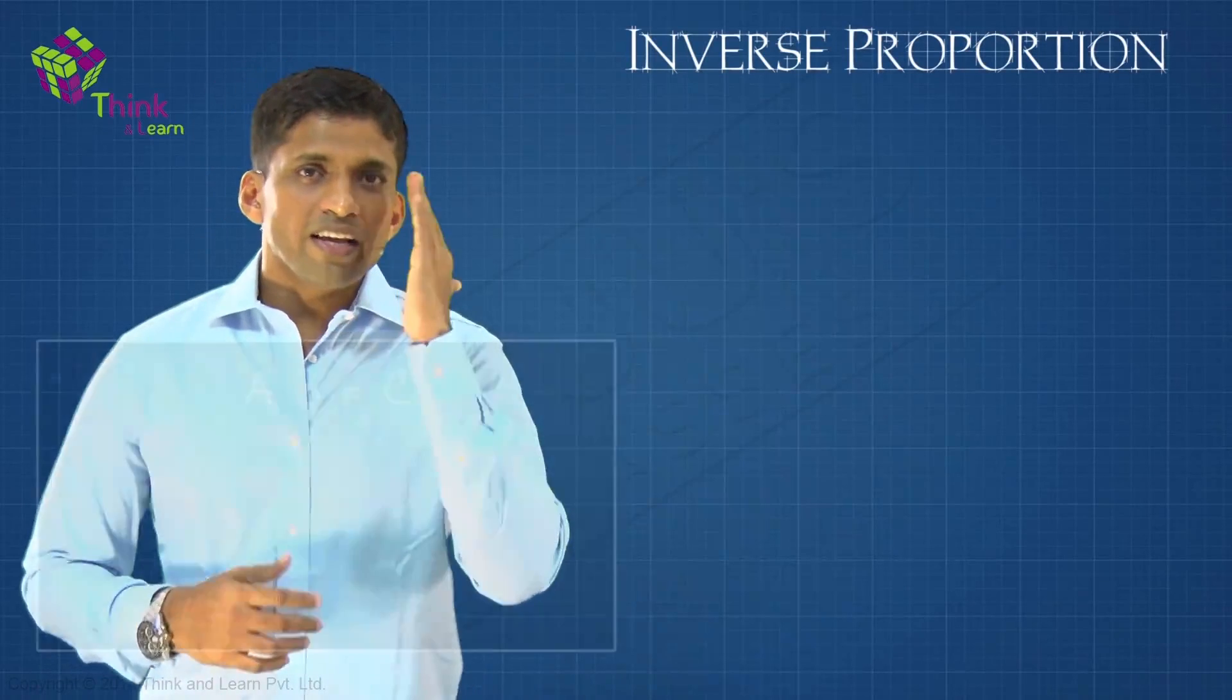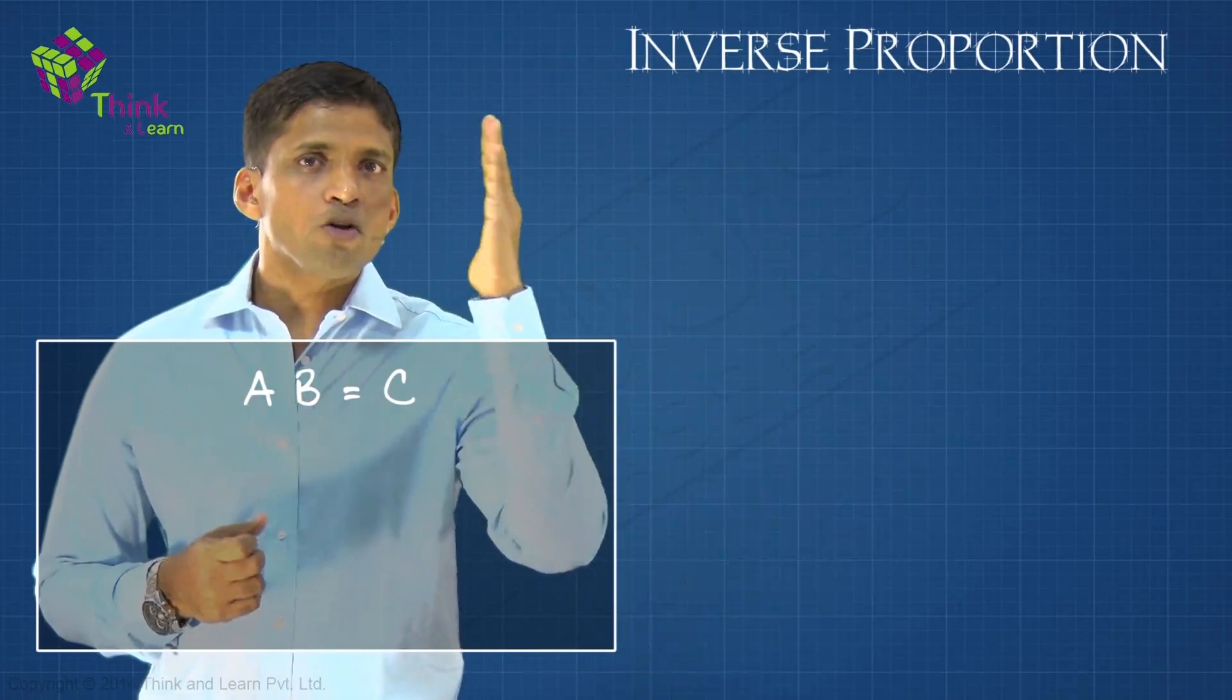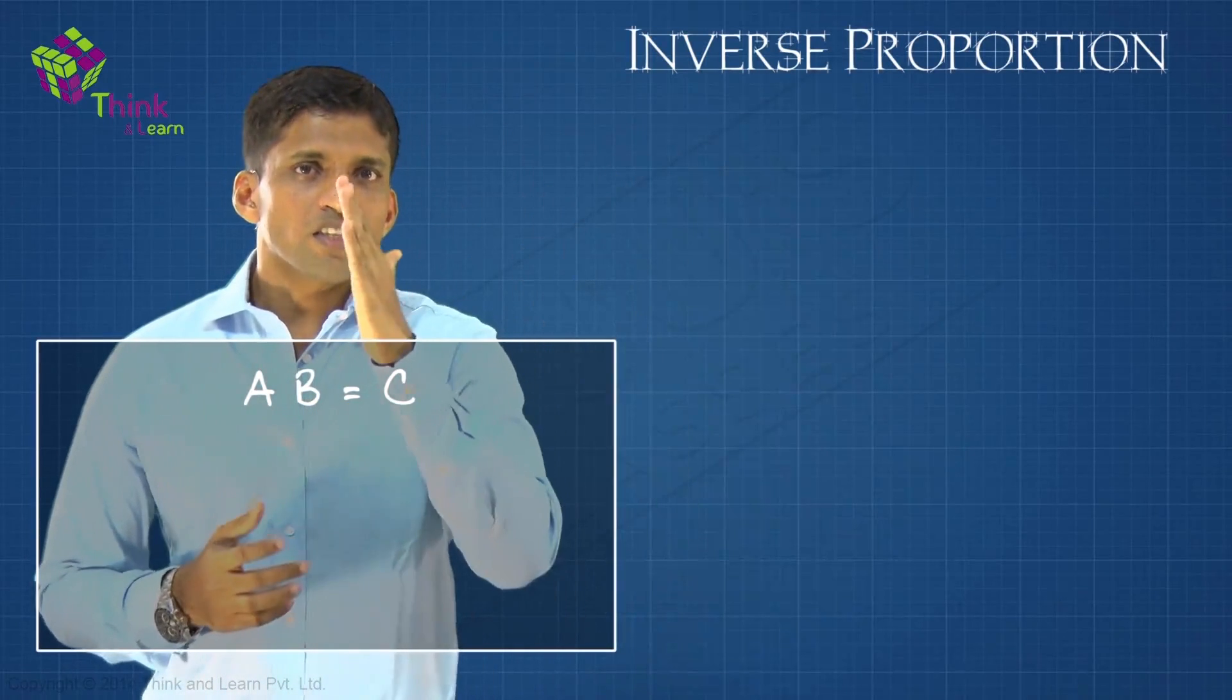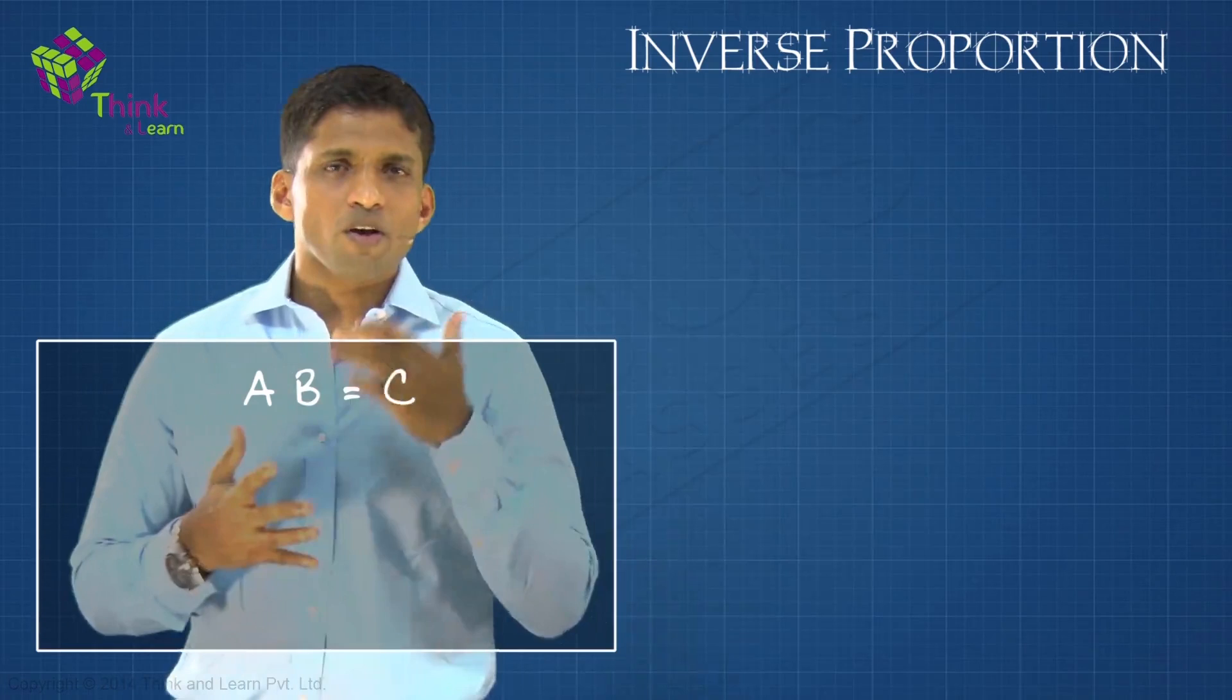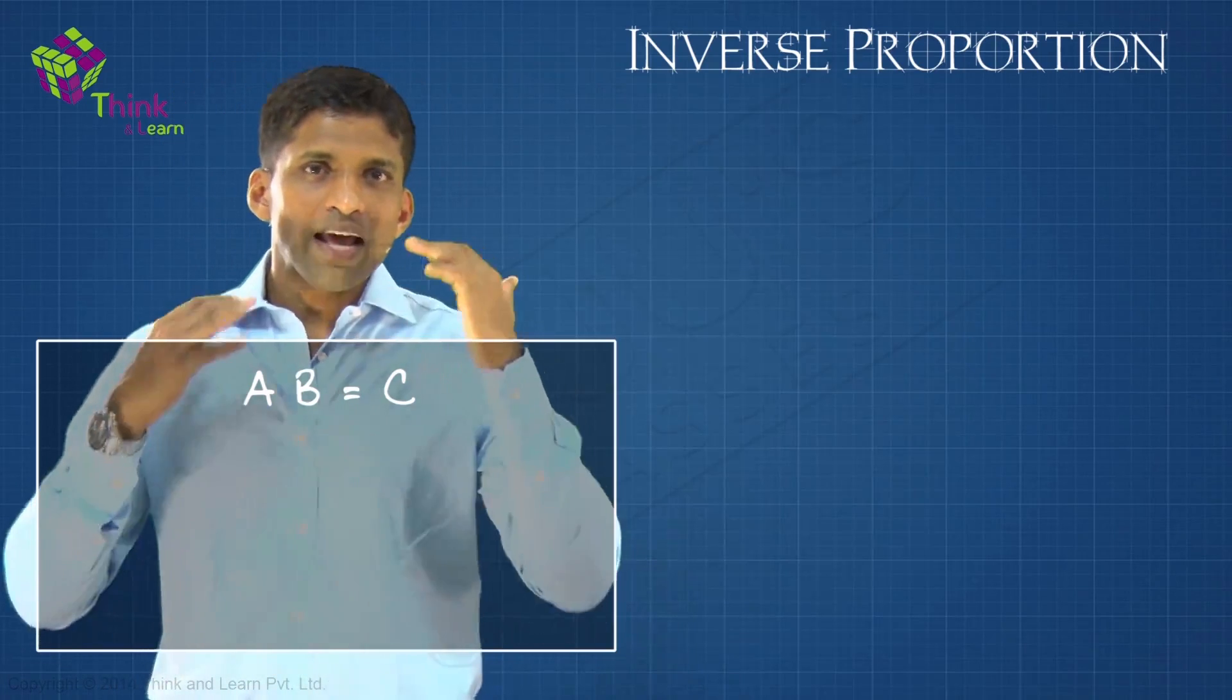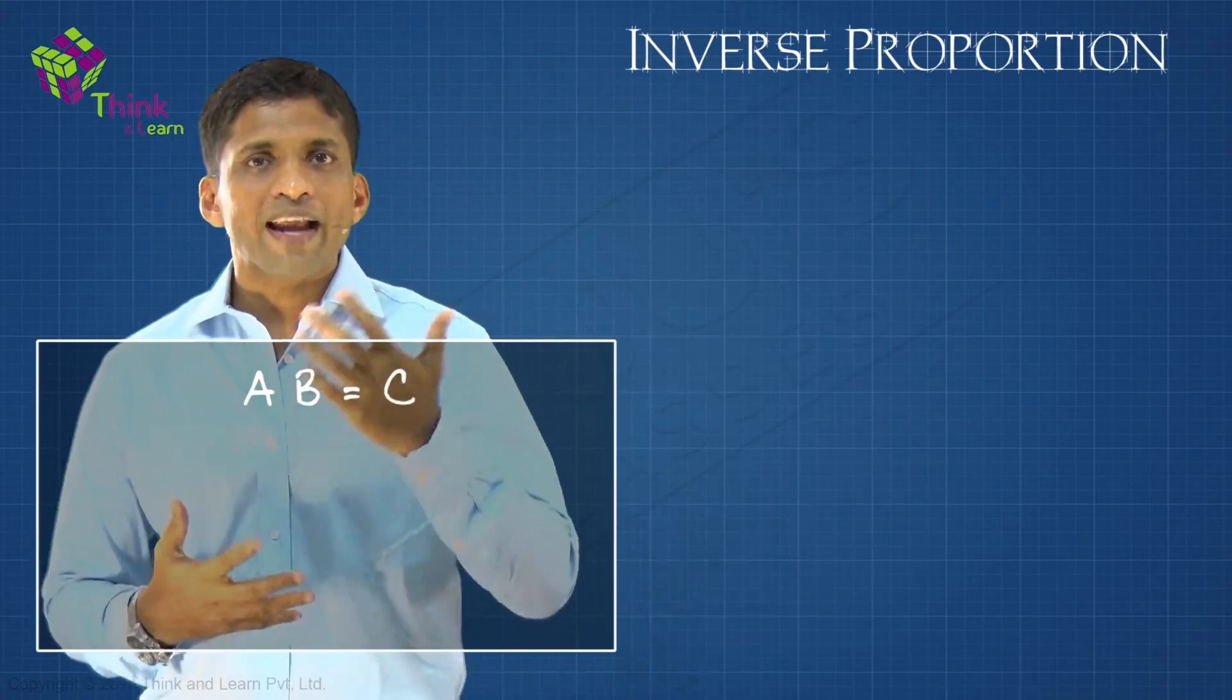Now we will learn A × B = C. So let's interpret A into B equal to C. This is inverse proportion. But before we discuss what is inverse proportion, let's interpret A × B = C in all the languages: words, variables, numbers, and diagrams.